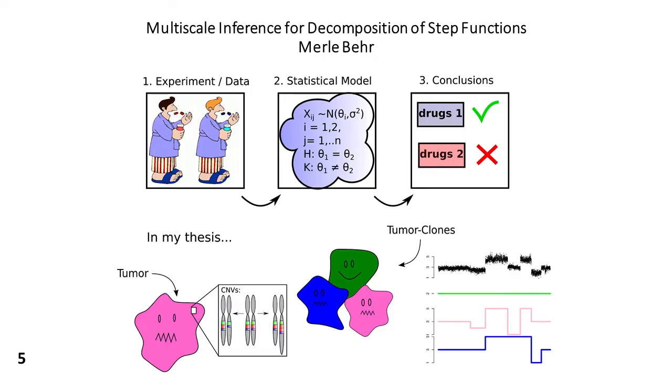Unfortunately, it's getting even more complicated. Because when a tumor grows older, we do not only have one type of tumor cells — we have a few different types, so-called clones. For instance, there's also this blue guy here, another really bad guy, but with different mutations. And when we use techniques like whole genome sequencing to measure these mutations, then everything gets mixed up. The blue guy and the purple guy, they overlap. And this describes precisely the statistical model I'm working on.